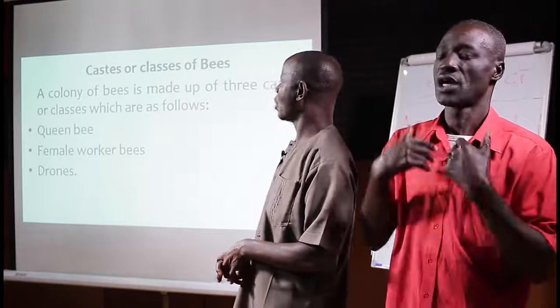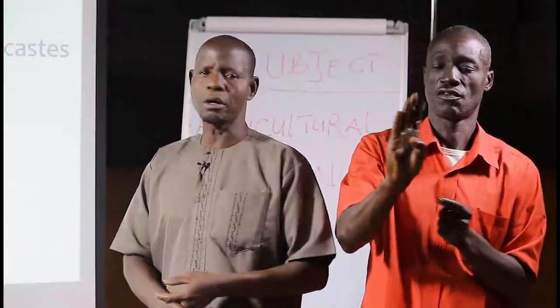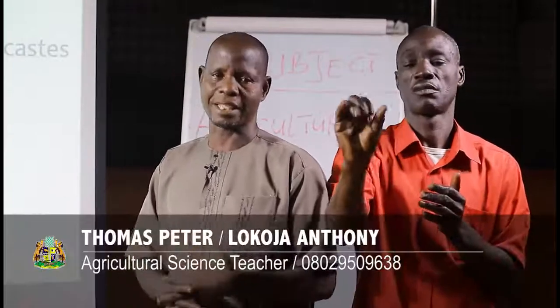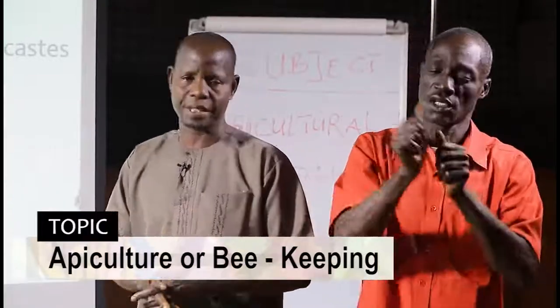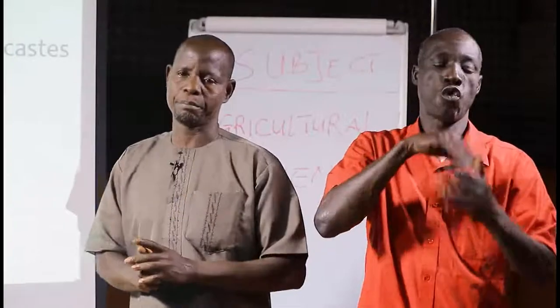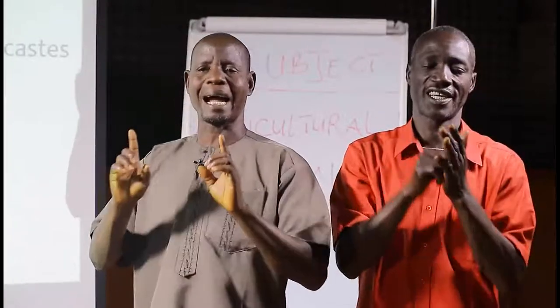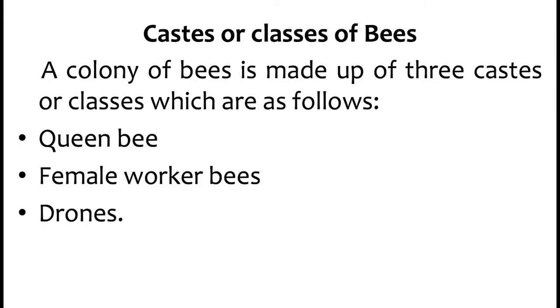Castes or classes of bees. We know that bees are social insects, so there is division of labor. Every class of bees performs their duties, and at the end of the day they achieve a particular aim — to produce honey. A colony of bees is made up of three castes or classes: the queen bee, female worker bees, and drones.